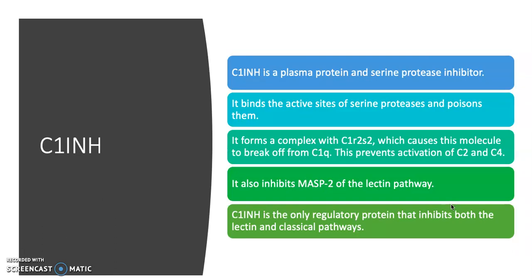There's also C1INH, a plasma protein and serine protease inhibitor. It binds active sites of serine proteases and poisons them. It can form a complex with C1R2S2, which causes the molecule to break off from C1Q, and this prevents activation of C2 and C4. C2 and C4 are essential to making C3 convertases, which cause C3 to split into C3A and C3B — C3B being an opsonin and C3A an anaphylatoxin. C1INH also inhibits MASP2 of the lectin pathway, and it is the only regulatory protein that inhibits both the lectin and classical pathways.